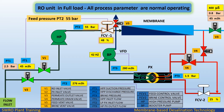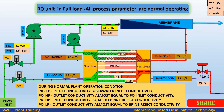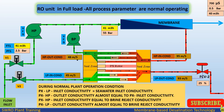RO Unit in Full Load Operation — all process parameters are at normal operating conditions. Feed pressure PT2 is 55 bar. During normal plant operation: PXLP Inlet Conductivity equals Seawater Inlet Conductivity; PXHP Outlet Conductivity almost equals PX Inlet Conductivity; PXHP Inlet Conductivity equals Brine Reject Conductivity; PXLP Outlet Conductivity almost equals Brine Reject Conductivity.